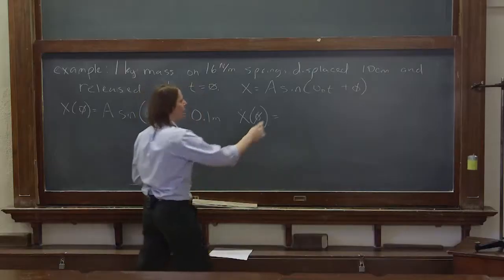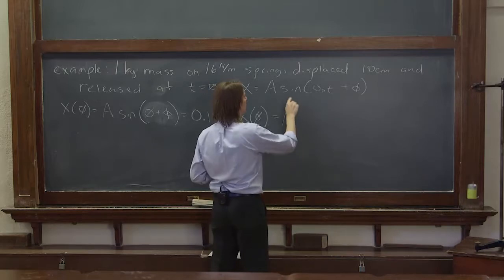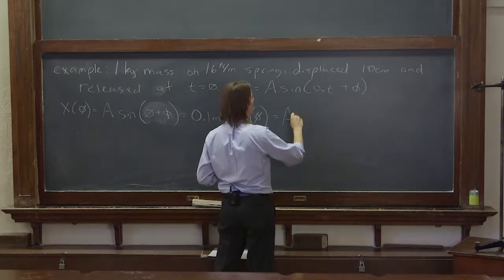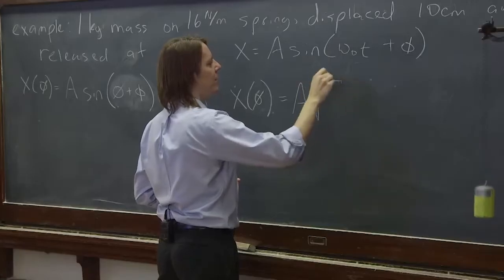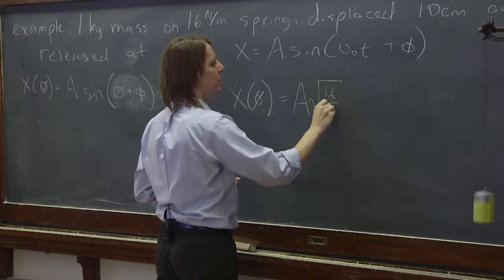Let's see, if we do the derivative real quick, we know it's A. Sine goes to cosine and it pulls out an omega. So there's an omega naught square root of 16 over 1.